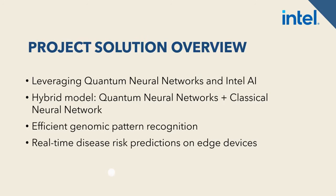Our project combines quantum neural networks with classical neural networks in a hybrid model, which allows us to efficiently detect genomic patterns. QNNs are ideal for high-dimensional pattern recognition, while classical neural networks aid in reducing data dimensionality. Together, they create a powerful model capable of predicting disease risk in real-time, which is crucial for clinical applications.